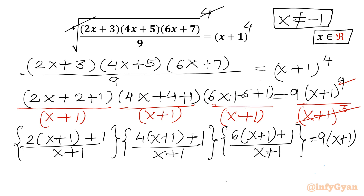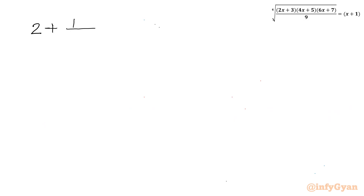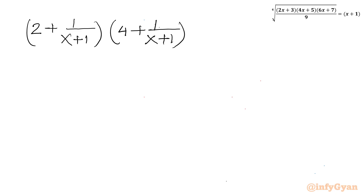Now I will divide each numerator factor by (x+1) in the LHS. Dividing gives: 2 + 1/(x+1), then 4 + 1/(x+1), then 6 + 1/(x+1). The RHS remains 9 times (x+1).